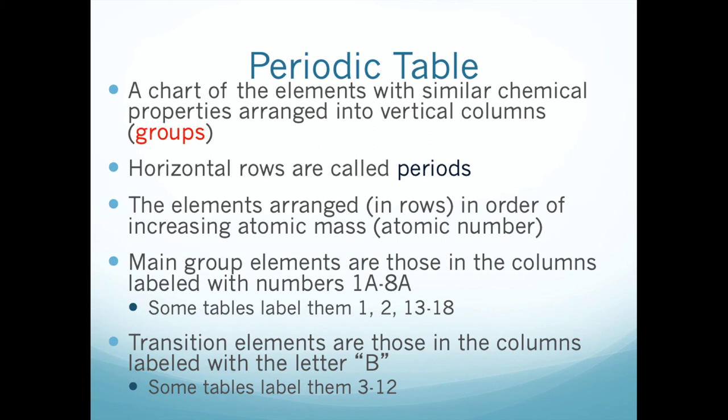The columns are numbered accordingly. Depending on how old your periodic table is, you might have different headings. Modern periodic tables number them simply 1 through 18. Older periodic tables tend to distinguish between main group elements and transition elements — the bridge that connects your periodic table.